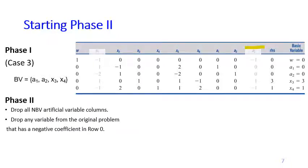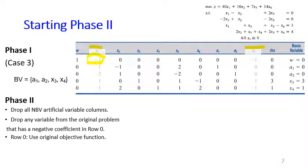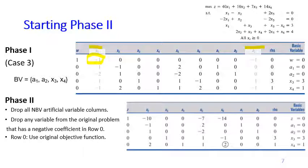We also drop any variable from the original problem that has a negative coefficient in row zero. Here, x1 is a variable from the original problem and it has a negative coefficient in row zero, so we drop x1 as well. We will not consider x1 during the phase two computation. This means x1 is effectively removed from the table.